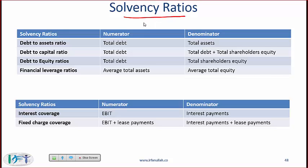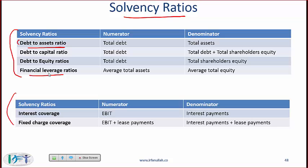Solvency ratios tell us about the company's ability to meet longer-term obligations. There are two categories. The first includes debt-to-assets, debt-to-capital, debt-to-equity, and financial leverage. Where debt is in the numerator, a low ratio means it is safer — you want low levels of debt. With the financial leverage ratio, a low value means safer and a high value means the company is more leveraged and has taken on more debt.